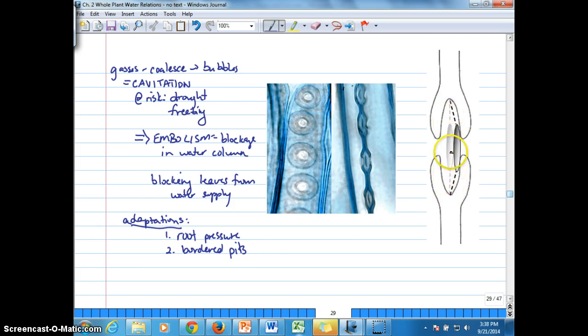It is a thin layer for the water to pass from one, say, one trachate over here to the second trachate over here. Now, this structure right here is referred to as a torus.